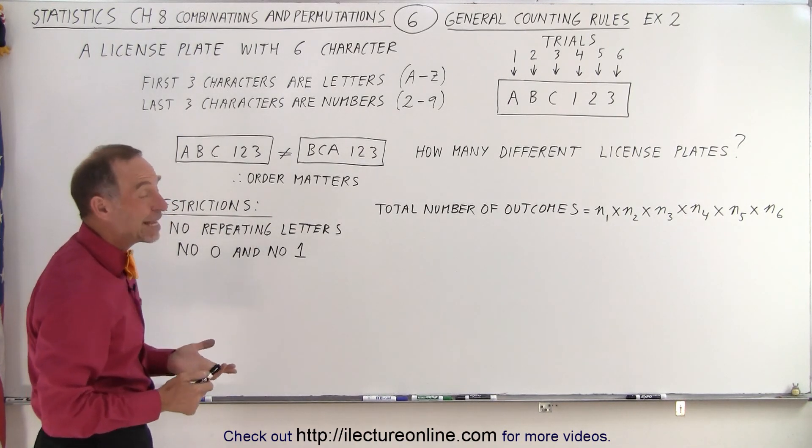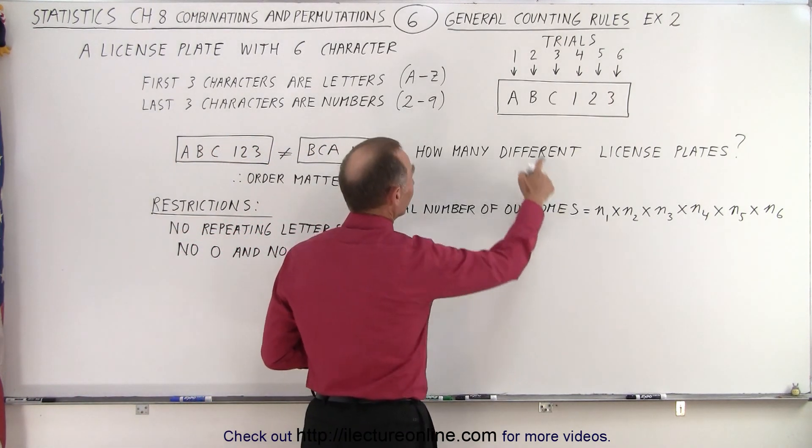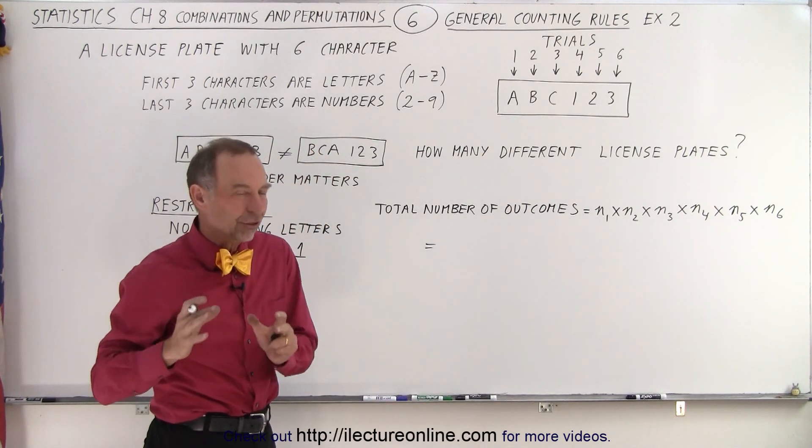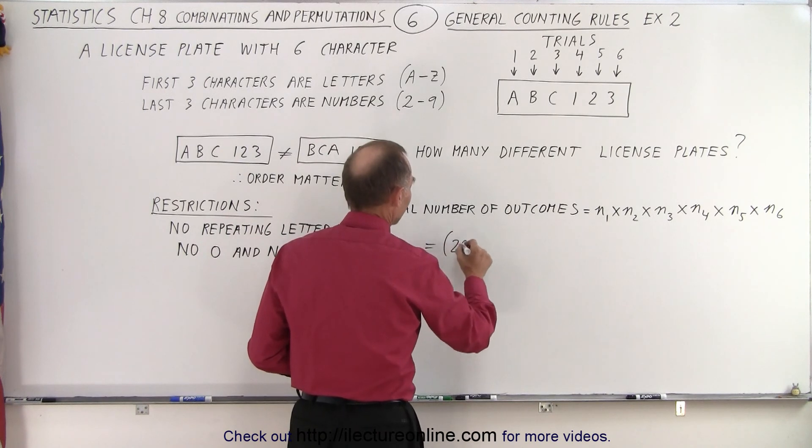Alright, so that means that the outcomes for each is going to be as follows. So on the outcome of the first trial, since no letters have been picked yet, all 26 are still ready to be picked. So we have an outcome of 26 for the first trial.